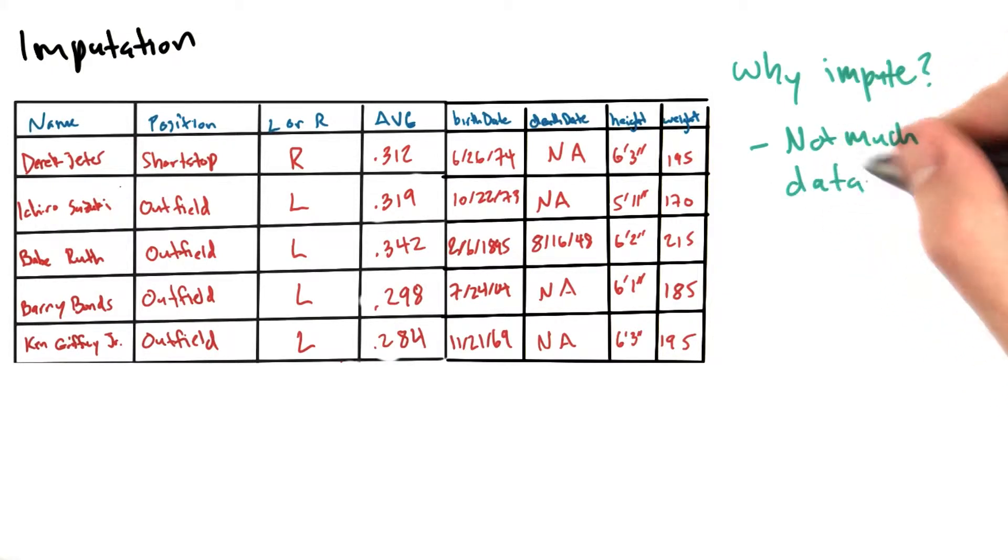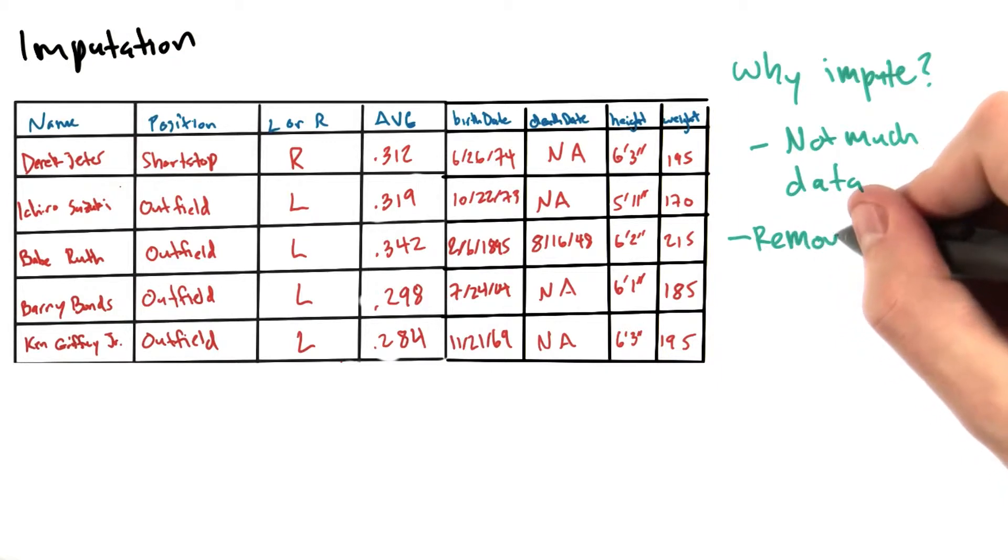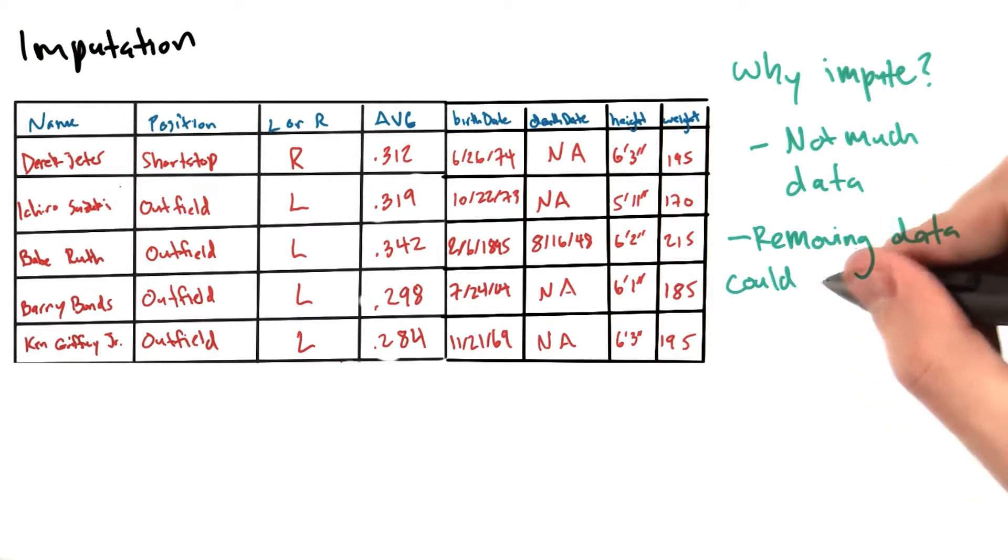In this case, it likely makes sense to make an intelligent guess at the missing values in our data. The process of approximating these missing values is referred to as imputation.